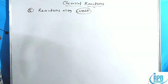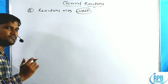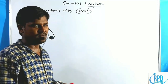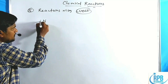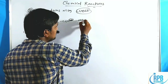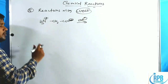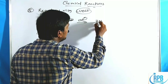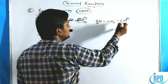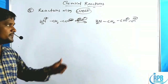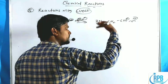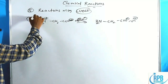Now let's discuss reactions with COOH functionality. The first reaction is with base. The dipolar cation, when treated with a base, allows the base to abstract a proton from the ammonium group, giving NH2-CH2-COO⁻ surrounded by a positive cation (salt). This species moves toward the oppositely charged electrode.